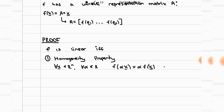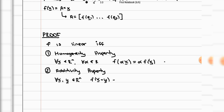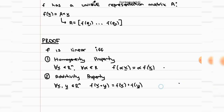The other property is the additivity property. It says that if you take two vectors in Rn and want to take f of the sum of x and y, it's equivalent to taking f of x plus f of y. With numbers, this is like saying f of 3 is equal to f of 2 plus f of 1, for example. Again, this is only going to be the case for linear functions. We're mostly going to be using these two properties to prove that the function is linear.